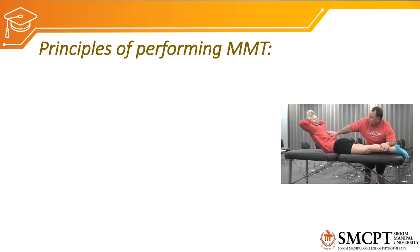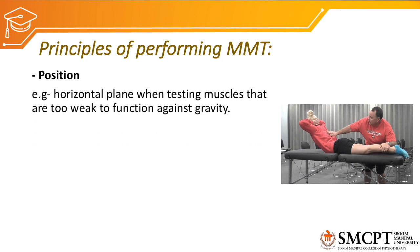Moving on to the principles of performing MMT. The first principle is the position of the patient: the starting position for the joint should be against gravity so that we can test grade 3 first. Once we test grade 3, if the patient is not able to perform it, we move on to horizontal plane positioning of the joint.